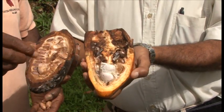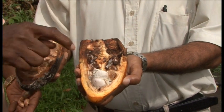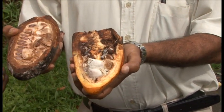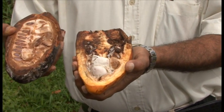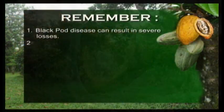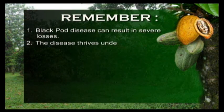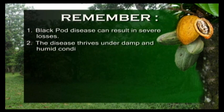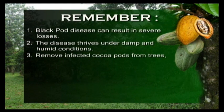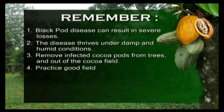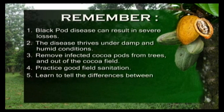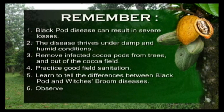One of the major differences between witch's broom disease and black pod disease is that with black pod disease, the beans, when infected inside, can still be separated from each other and easily removed. However, with witch's broom disease, the entire bean mass is clumped, gets very hard, and cannot be separated. Remember: black pod disease can result in severe losses; the disease thrives under damp and humid conditions. Remove infected cocoa pods from trees and out of the cocoa field. Practice good field sanitation and learn to tell the difference between black pod and witch's broom diseases.